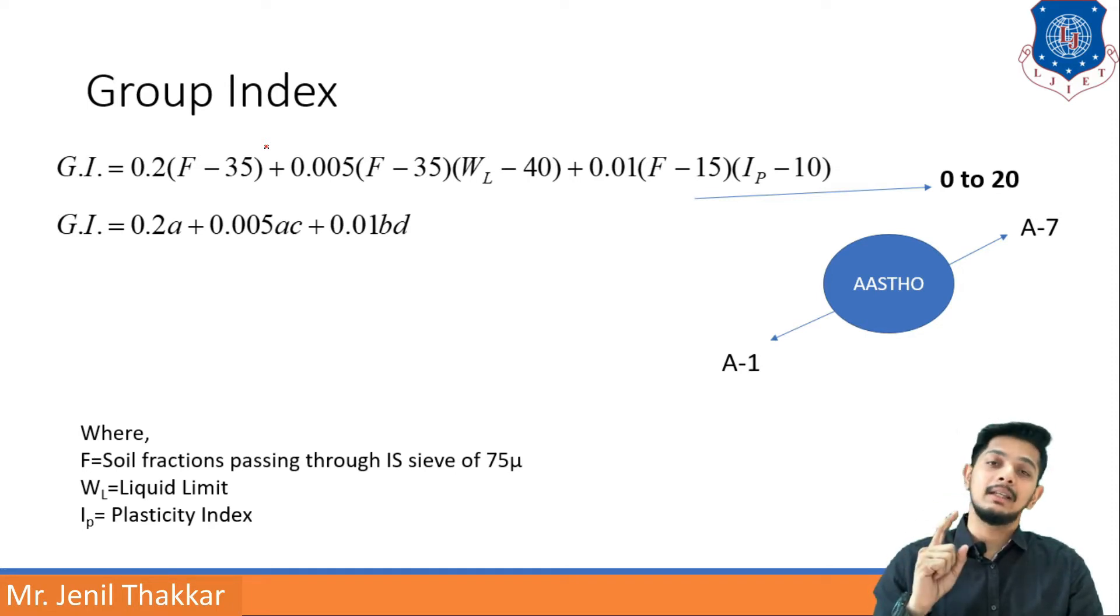F is soil fractions passing through IS sieve of 75 micron, WL is liquid limit, and IP is plasticity index. If you have these three things you can find out group index of any soil. Now this long formula has been shortened with ABCD alphabets.